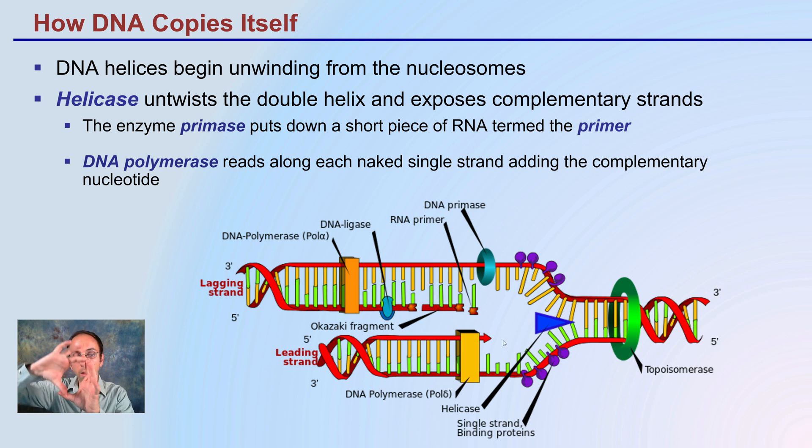Helicase untwists that double helix and exposes those complementary strands. The enzyme primase puts down a short piece of RNA termed the primer. Keep in mind that RNA primer is like the little flag that says okay DNA polymerase you're gonna start here.